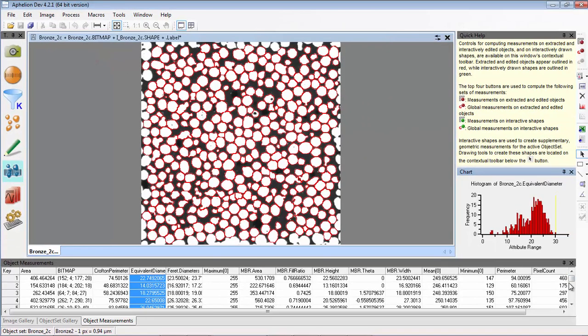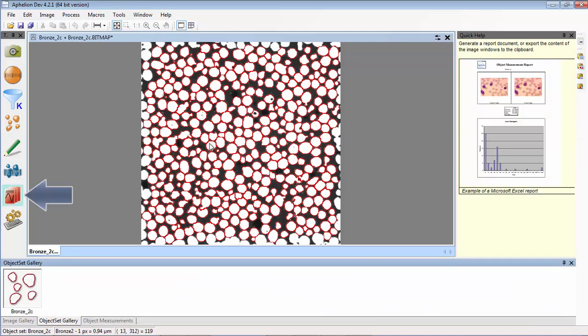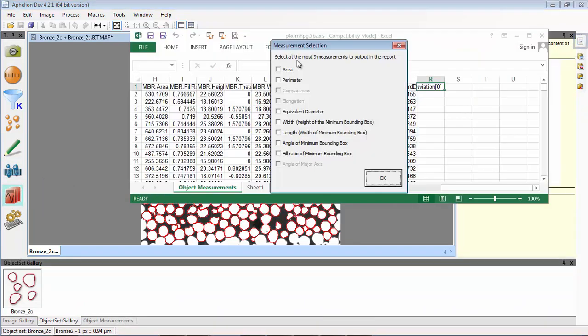In this case, there are more than 350 particles that were measured. This is a lot of data, but it can be easily exported to Excel, and a summary report will be quickly created by using the report generator.